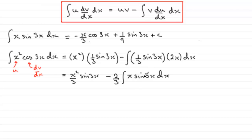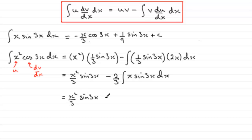Now we can see why they asked us to use part A, because we've got the result of the integral of x sine 3x with respect to x right up here. So all we need to do is substitute that in. We've got x squared over 3 times sine 3x, and then minus two thirds multiplied by the answer we had from part A.